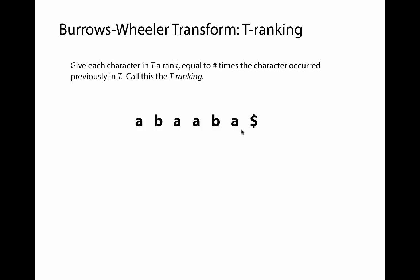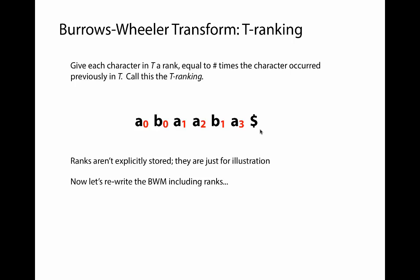I want to emphasize that the ranks are not things we actually store - I'm only using them for illustration so we can tell letters apart before and after the permutation. Now looking at the Burrows-Wheeler matrix with all characters annotated with their T-ranking, if we ignore the middle columns and just look at F and L - the first and last columns - and then hide everything but the A's, we notice something: the A's occur in the same order reading top to bottom in the first column as they do in the last column. So A sub 3, A sub 1, A sub 2, A sub 0 in F matches A sub 3, A sub 1, A sub 2, A sub 0 in L.